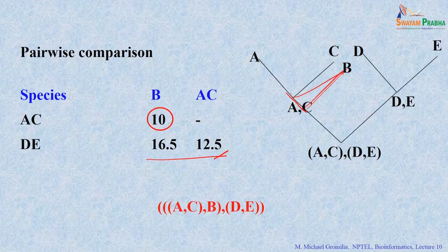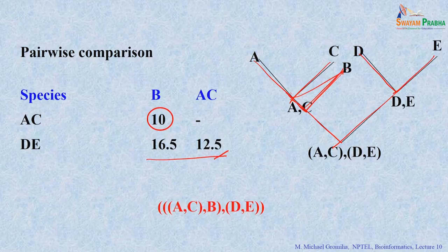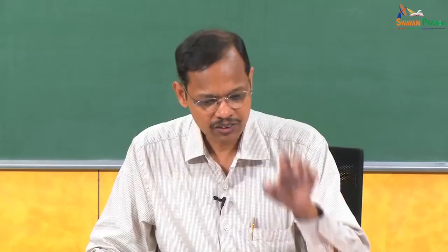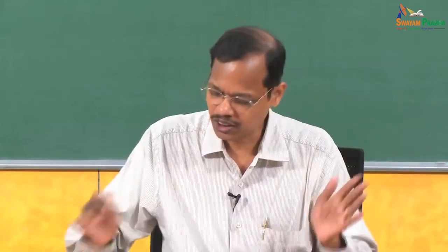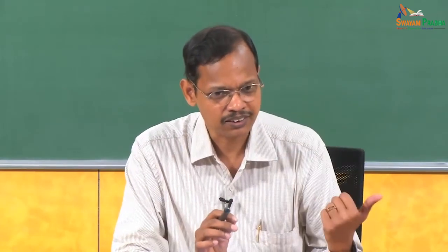From this graph, we can tell which organisms are close to each other. The next question is how long it takes to evolve from one to another — we have a time frame. The number of mismatches tells us time: fewer mismatches means less time, more mismatches means more time to evolve. We can calculate branch lengths from the distance matrix. D and E have distance 5, so each branch is 2.5.